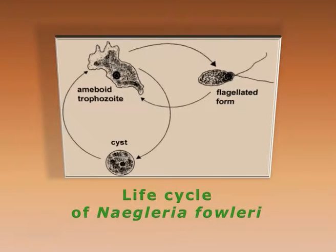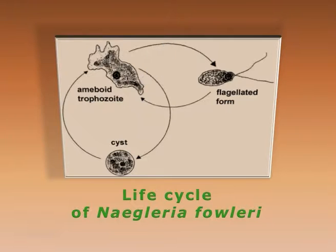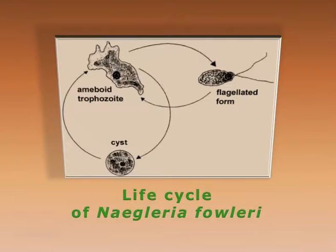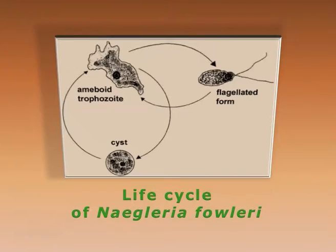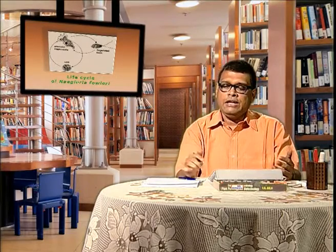Naegleria fowleri has a simple life cycle with amoeboid trophozoites and flagellated trophozoites — they are dynamic and can move both by flagella or by pseudopodia. When inside animal tissue, they may produce cysts that remain within the brain tissue, germinate, and spread, completing the life cycle. This induces symptoms including headache, fever, and nausea. It can enter through the nose into the bloodstream or the olfactory epithelium, producing toxic proteins.